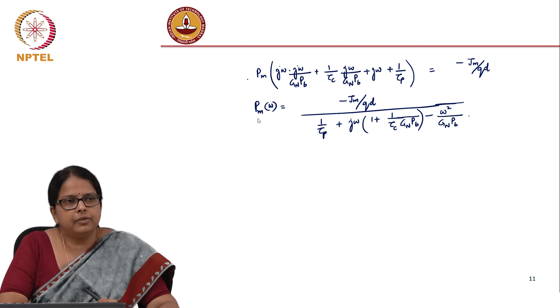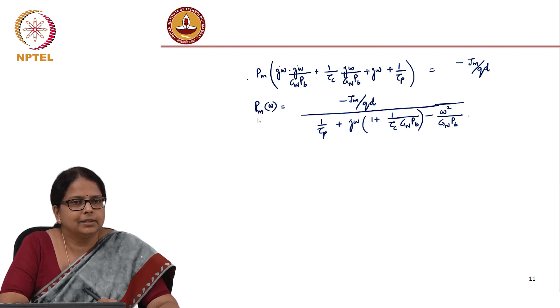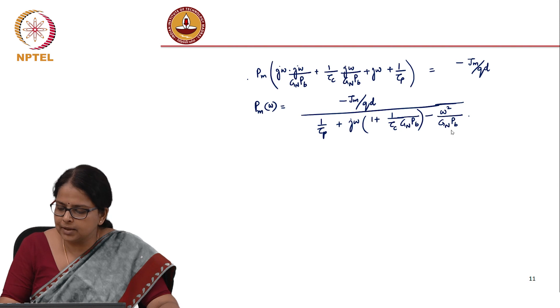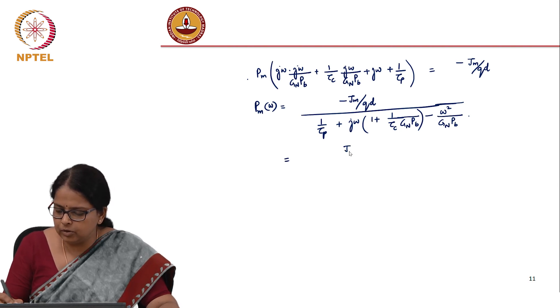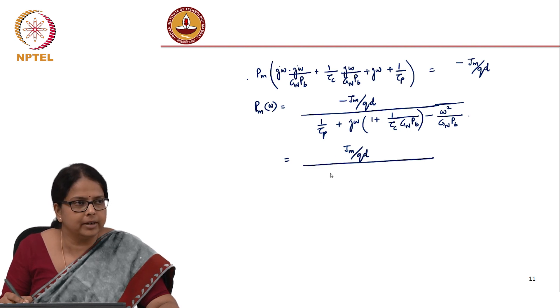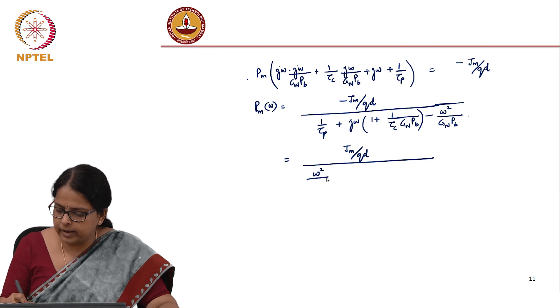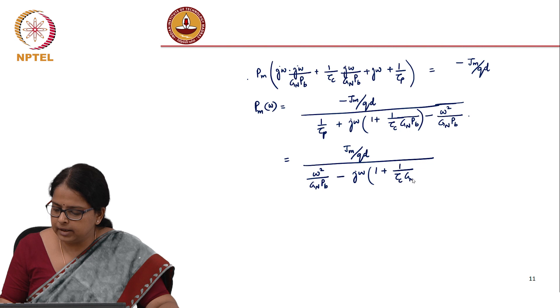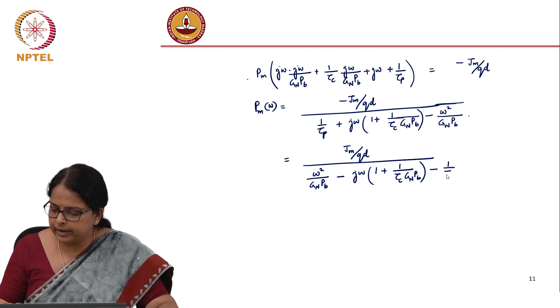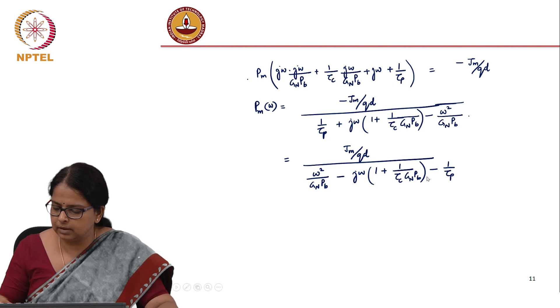Now what does the form of this equation look like? You have an omega squared, you have an omega. I can rewrite this as j_m/(qd), multiply numerator and denominator. I can write it as omega^2/(g_n*p_b) minus j*omega*(1 + 1/(tau_c*g_n*p_b)) minus 1/tau_p.